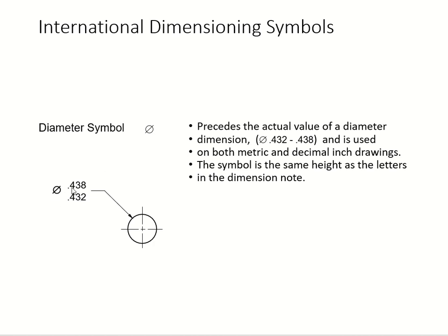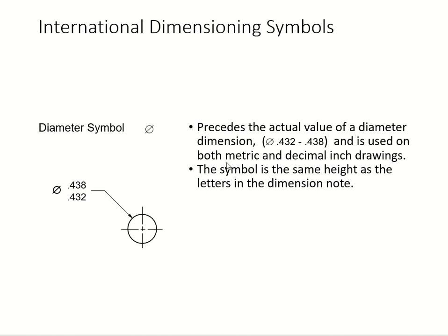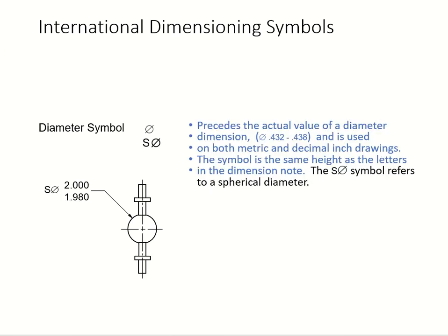This symbol has the same height as the letters in your dimension. For a sphere, we use a different symbol — S-diameter — instead of the plain diameter symbol. The X here indicates it's a sphere, and we use the spherical diameter symbol followed by the tolerance.